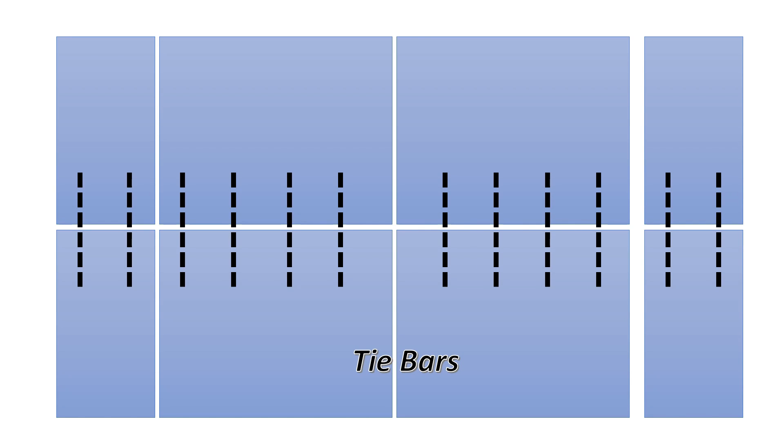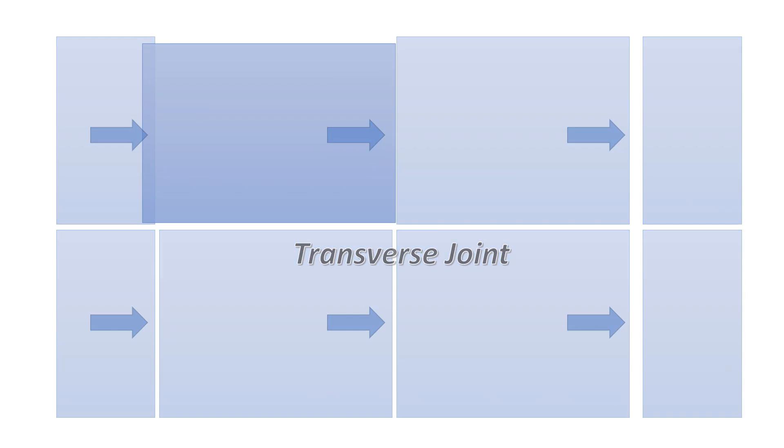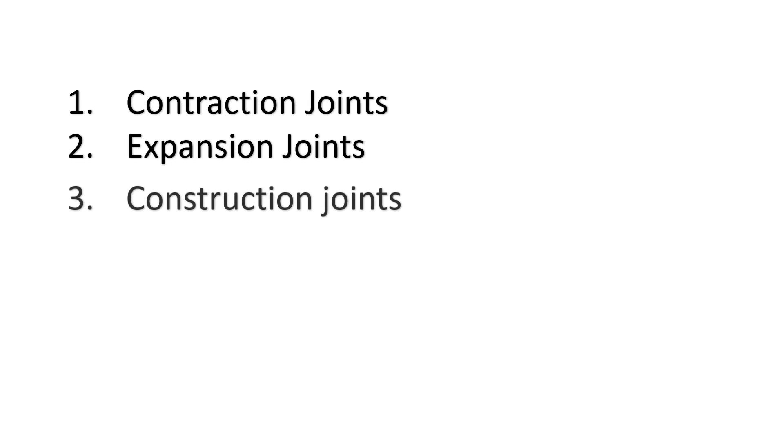Now we will see the transverse joints. Transverse joints are provided in direction perpendicular to that of the longitudinal joints, and as we saw, it is subdivided into three types: contraction joints, expansion joints, and construction joints. At first, we'll go through contraction joints.